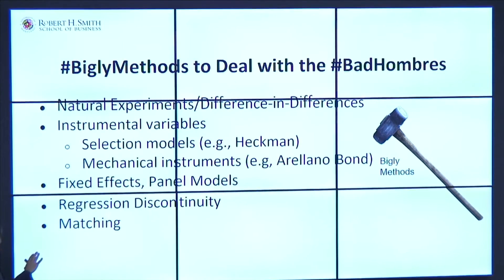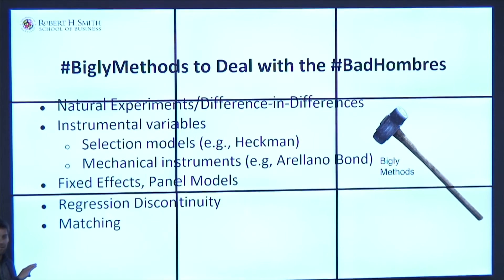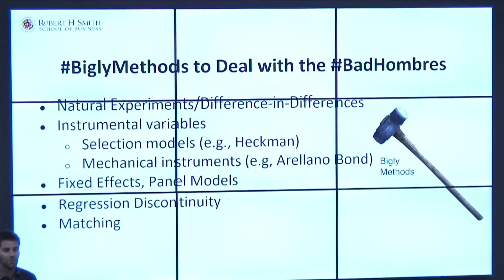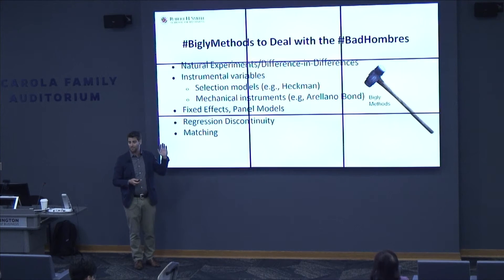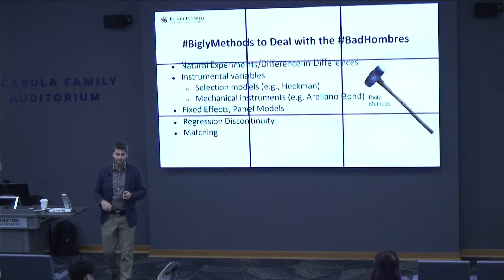I just want to say this publicly: matching, at least in the management literature, has become kind of the de facto — if you can't do anything, you do matching. But matching doesn't actually solve any of the bad hombres. It's not really an identification strategy. It's a method to try to make sure your treatment units are comparable to the untreated, but it doesn't resolve any problems of omitted variables, simultaneity, measurement error, or any of those things. These other methods are actually going to get us back to a causal estimate.